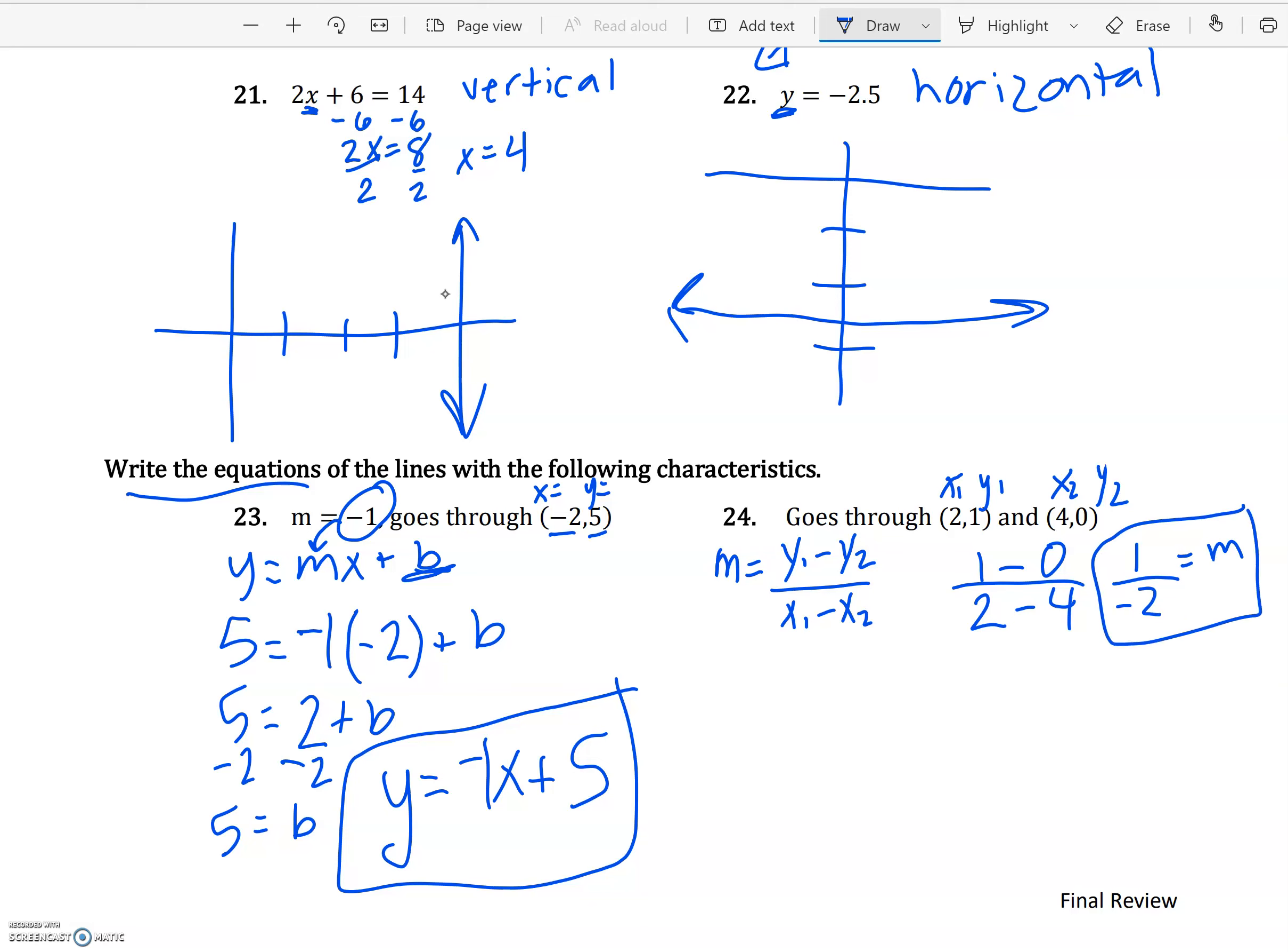Now we can just follow the same procedure we did on number 23. So I know for my equation, I have -1/2 x plus b. And we can pick either of the two points I want to plug in for x and y. I'm going to pick (4, 0) because I love plugging in 0. So x is 4. And y is 0. Add b. That's a nice number there. -1/2 times 4 is -2.